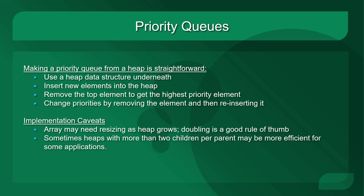Now that we've figured out how to make a heap, making a priority queue from it is pretty straightforward. We use the heap as the underlying data structure. To insert new elements into the priority queue, we just put them into the heap as described. To get the highest priority element — or lowest priority in a min heap — we just remove the top element. To change the priority of any element, we remove it, set it to a new priority, and reinsert it into the heap, where it will swim up to whichever position it needs in order to restore the max heap property efficiently.